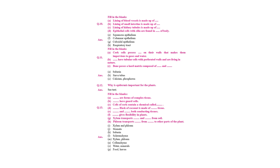Fill in the blanks for plant tissues: xylem and phloem form complex tissues; the husk of coconut is made up of sclerenchyma tissue; xylem and phloem are both conductive tissues; colenchyma gives flexibility in plants; xylem transports water and minerals from the soil; phloem transports food from the leaves to other parts of the plant.